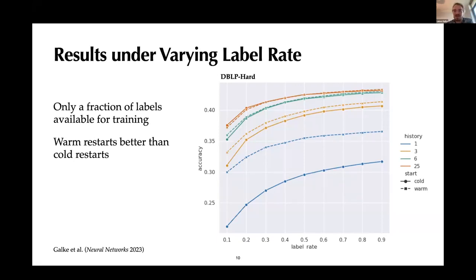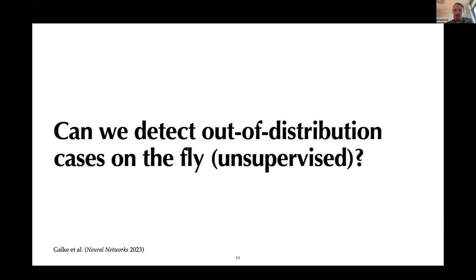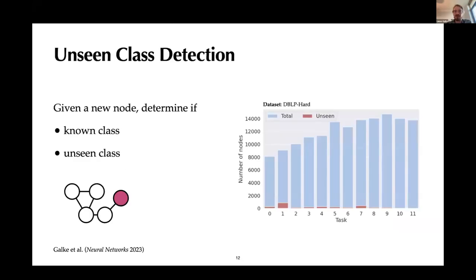Okay, so that was the first step of bringing continual learning to graphs. But now we also want to detect out of distribution cases, so new classes that appear on the fly. And we want to do this in an unsupervised way. Before they were even considered for evaluation, but the model had little chance to actually predict them because they were never in the training set before. So we looked at the data and saw that there are new classes, but not so much. So the majority is still known classes. It does not change so quickly. And the plot here, the red small bars are the unseen nodes that are from unseen classes.